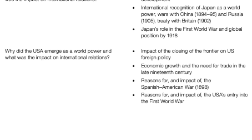Why did the USA emerge as a world power? The impact of closing the frontier is key: by the 1890s, there were no more areas left to conquer within the continental United States that had been occupied by Native Americans. This transformed the American psyche and its foreign policy — leading to events like the annexation of Hawaii and the Spanish-American War. These events increased America's international standing and foreshadowed the 20th century becoming the American century.